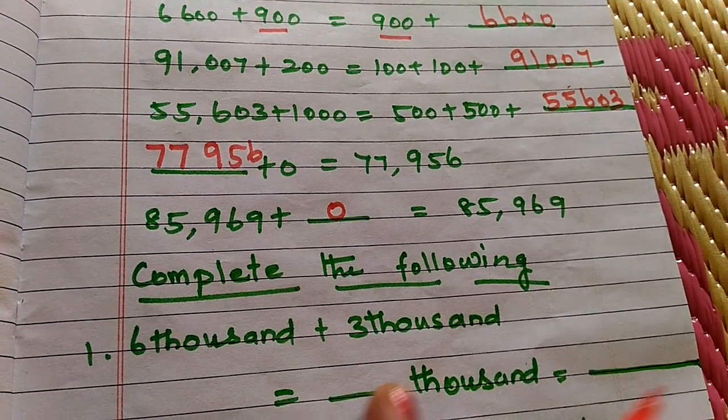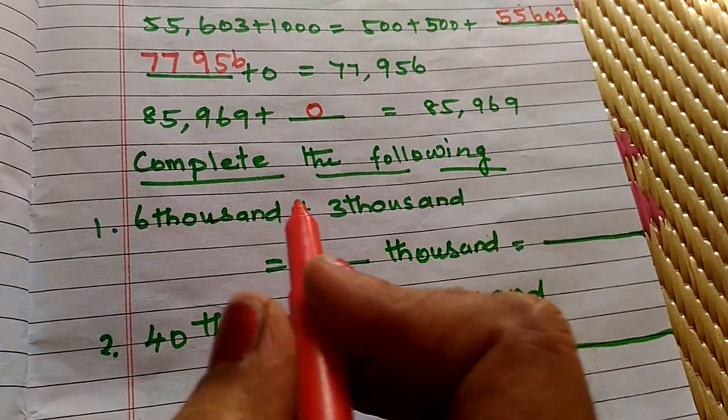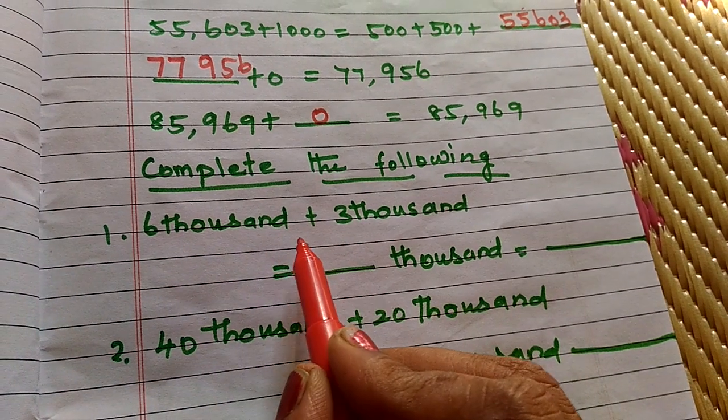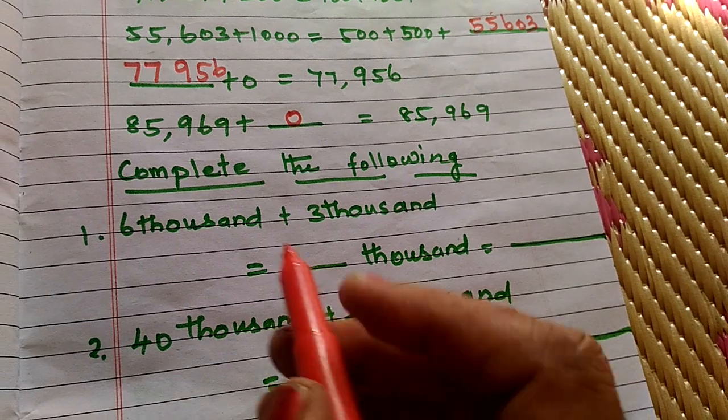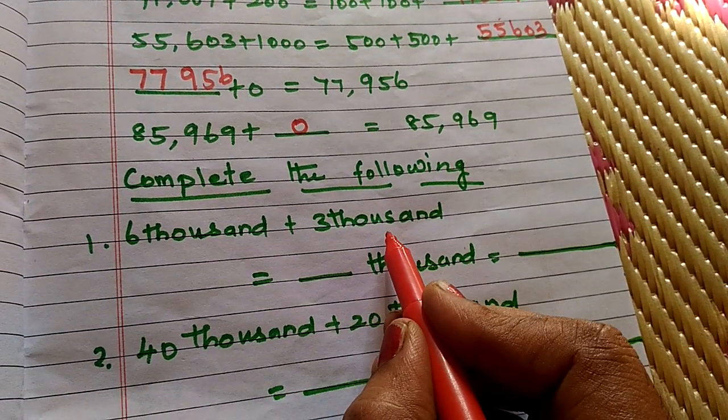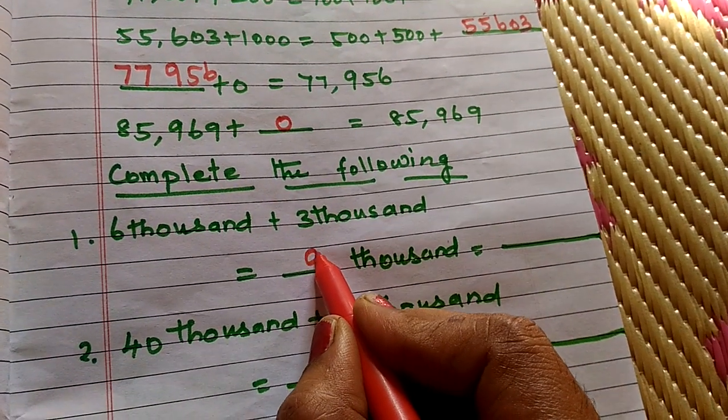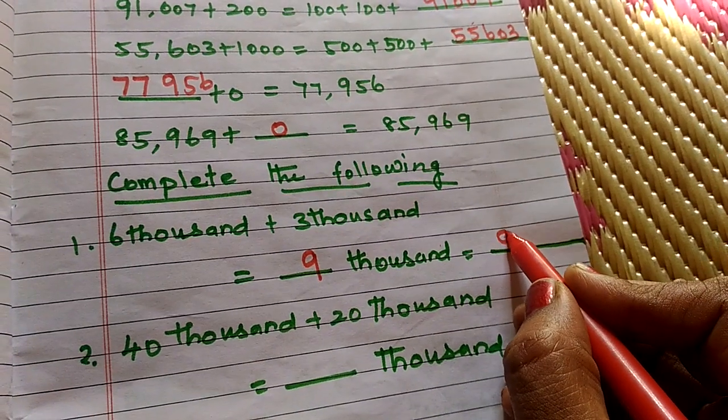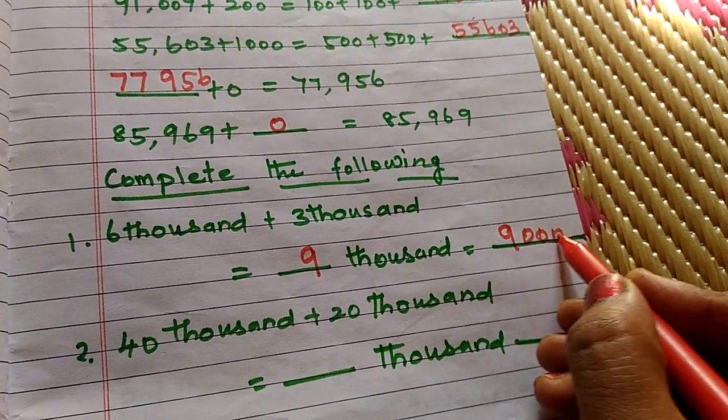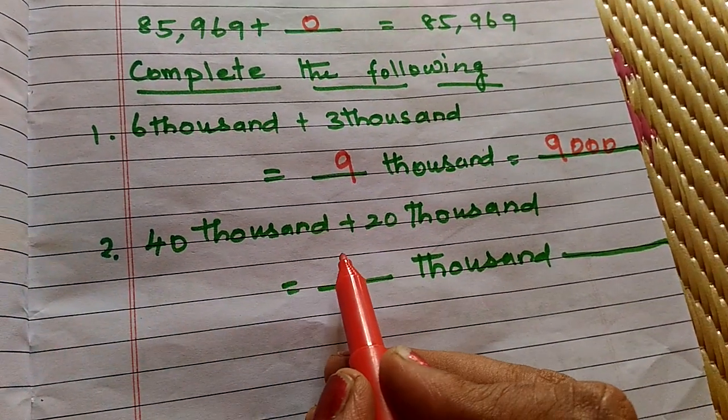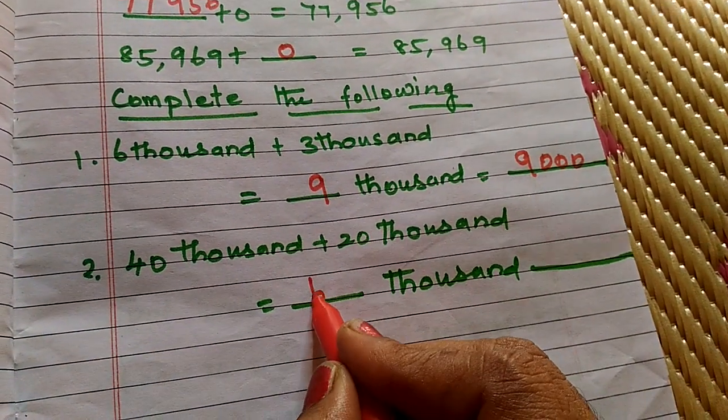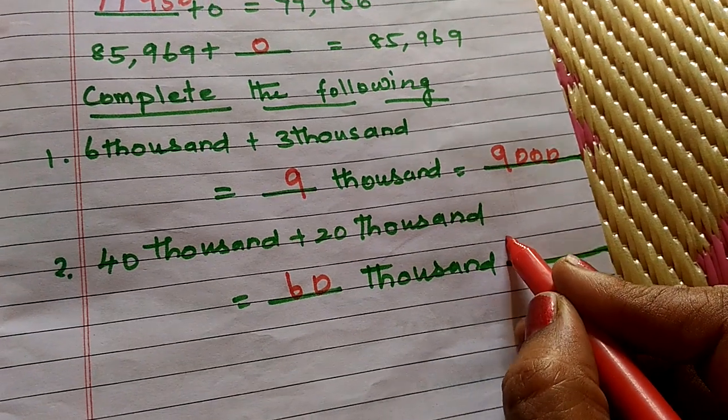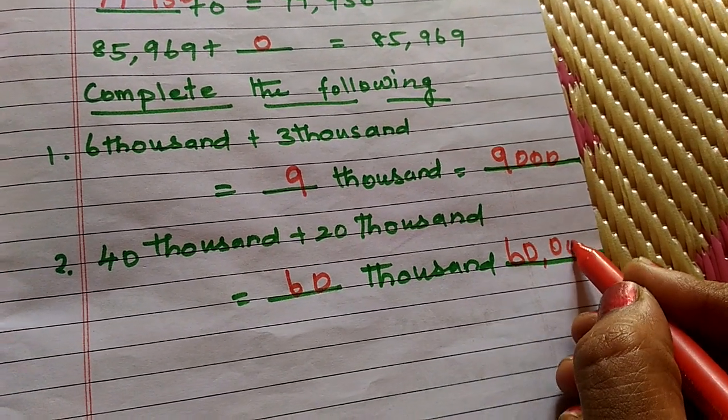Complete the following. 6,000 plus 3,000 equals 6,000 plus 3,000 equals 9,000. 9,000. 40,000 plus 20,000 equals 60,000. 60,000.